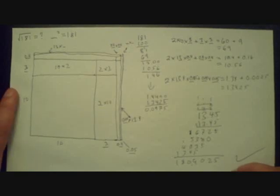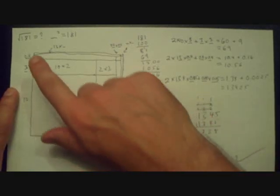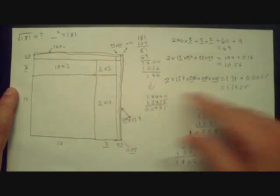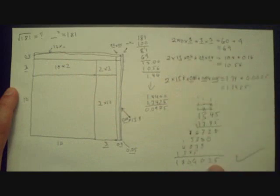So last time we looked at a geometrical way to compute the square root of 181. And you can see the squares and then all the calculations.